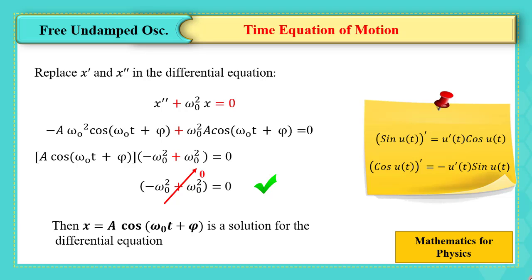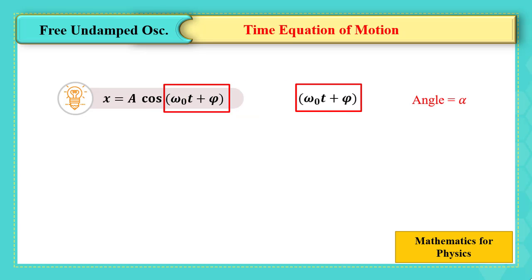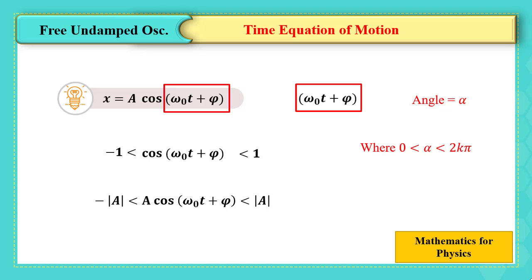Now it's your turn to try the same verification for x equals a sine (omega 0 t plus phi). It's good that we have verified this is a solution, but how can we understand this new time equation? We should recognize that omega 0 t plus phi represents the angle for cosine in this equation. Remember that cosine varies between minus 1 and plus 1, where alpha lies between 0 and 2k pi. Then a cosine (omega 0 t plus phi), which is x, should lie between minus the absolute value of a and plus the absolute value of a.